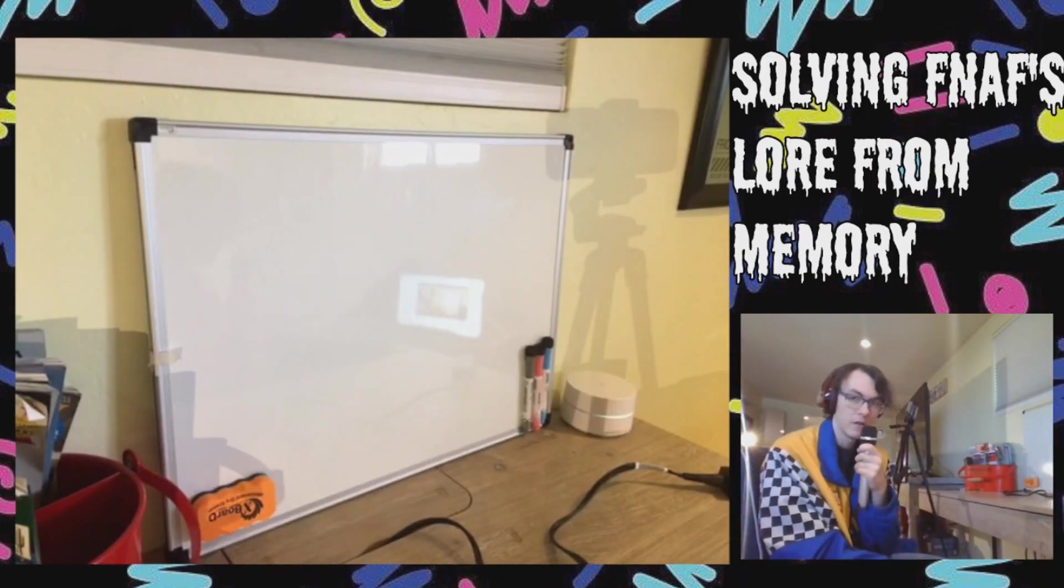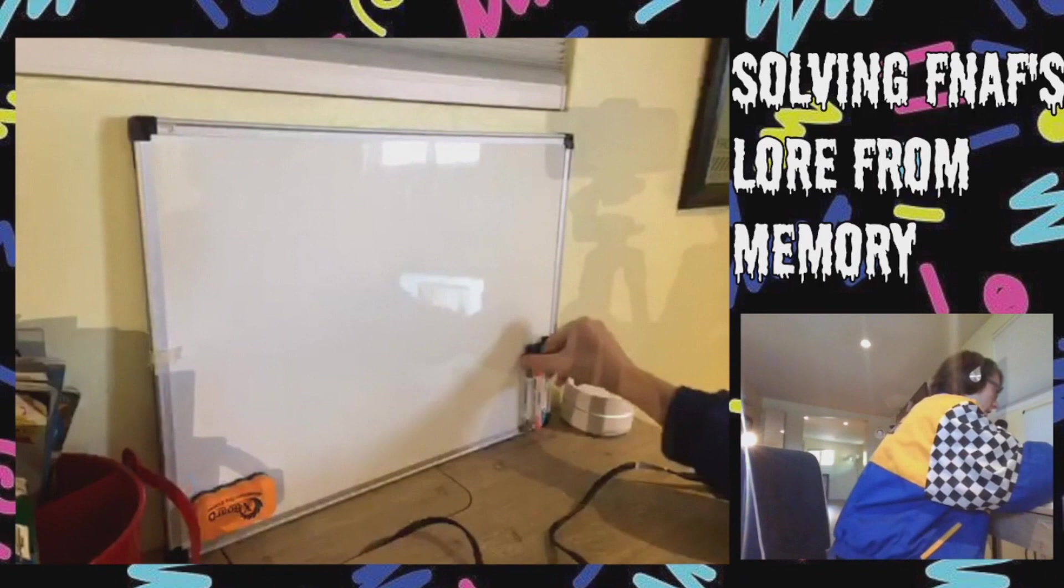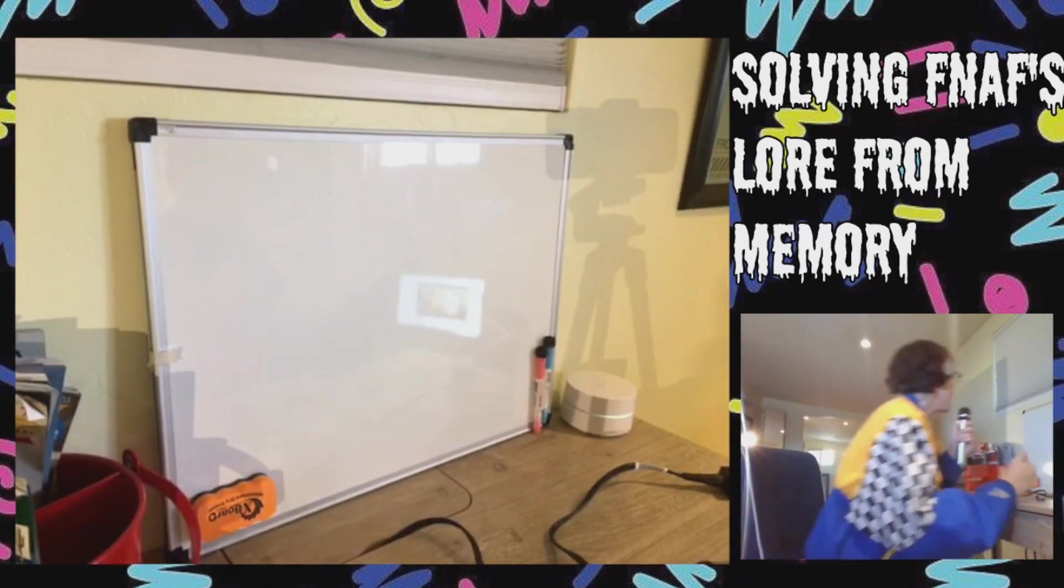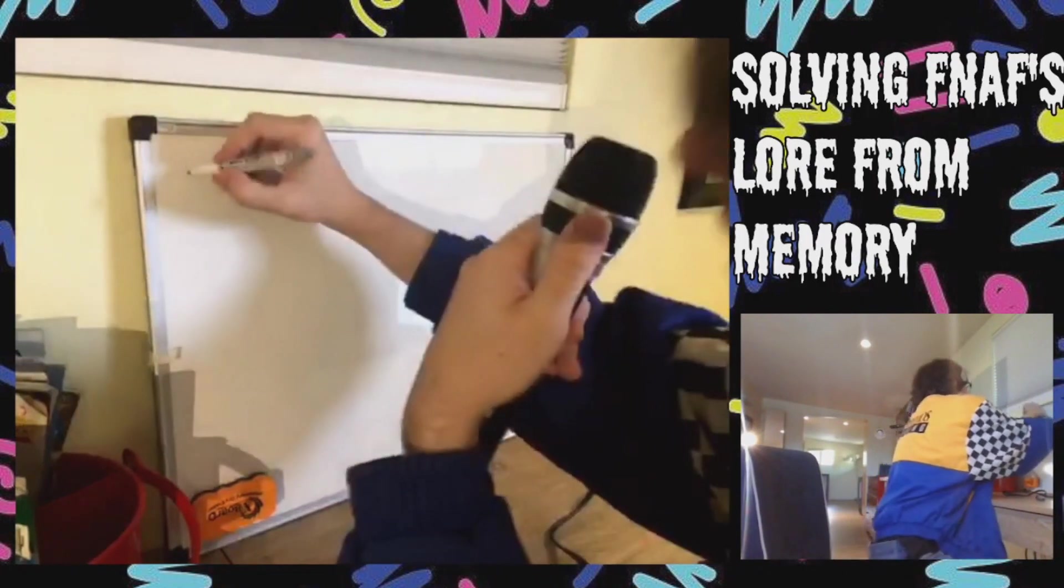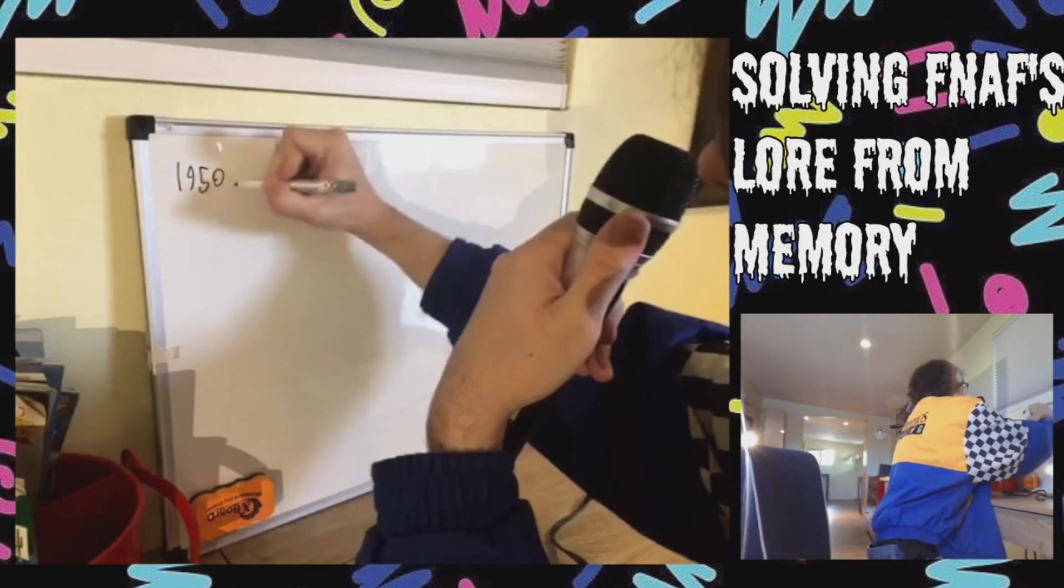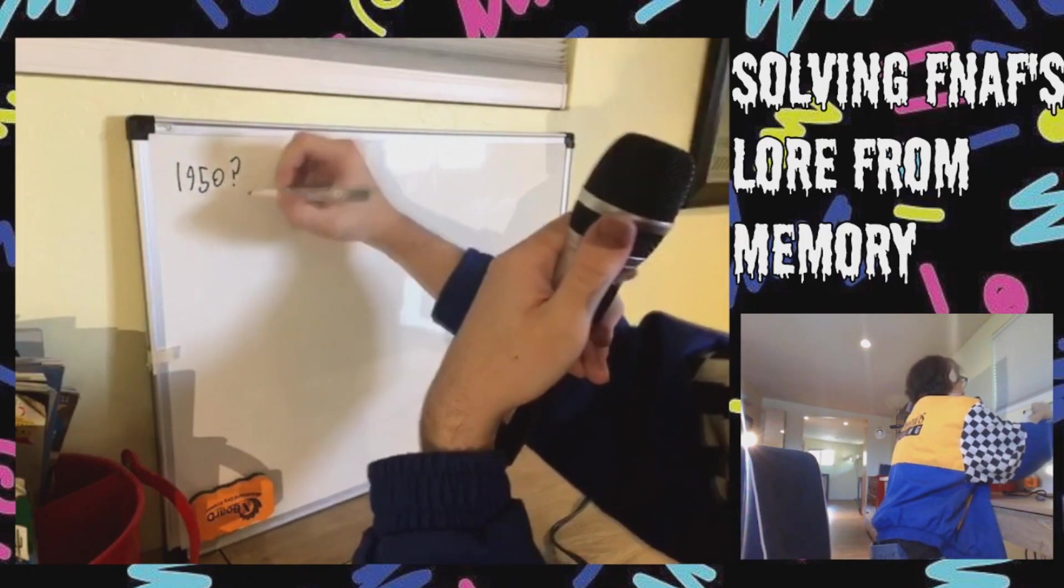So we're going to be writing a timeline of events on this whiteboard and trying to figure out all of this FNAF stuff. Why the fuck do I look like I deliver pizza? I don't know man, that's just how I am. So, beginning of FNAF, I guess, starts with maybe sometime in the 50s or the 40s. Like 1950, William Afton is born.